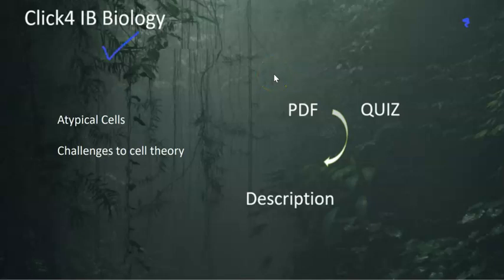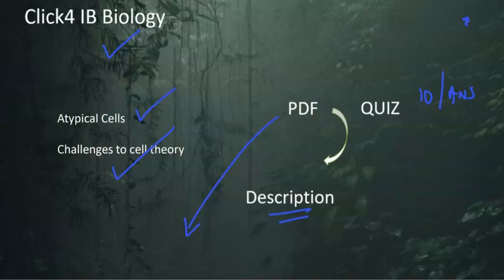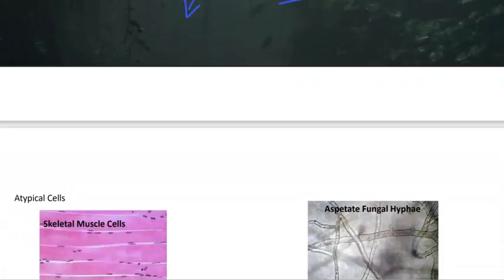Welcome to IB Biology. We're going to be looking at what are called atypical cells — cells which pose a challenge to the accepted cell theory. There's a blank PDF of the presentation in the description along with 10 questions with answers so you can check your understanding of the content.